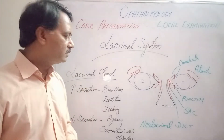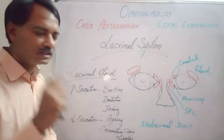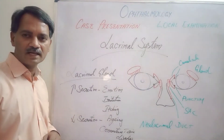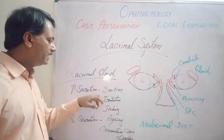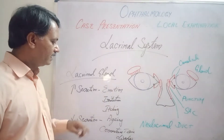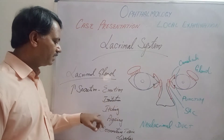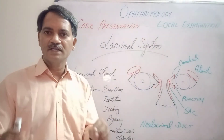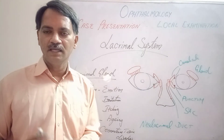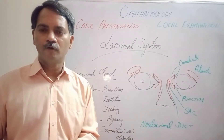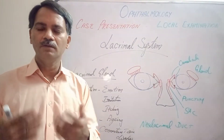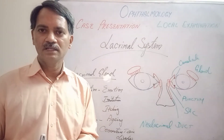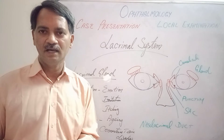Regarding functional problems of the lacrimal gland: increased secretion is usually due to emotions, or due to irritation and itching caused by infections in the conjunctival sac, infections of the cornea, foreign bodies in the conjunctiva or cornea, and pollen grains or dust particles causing allergic reactions in the eye.